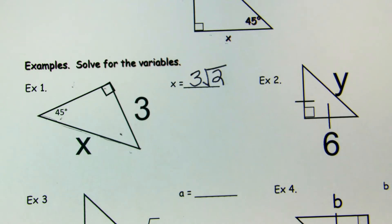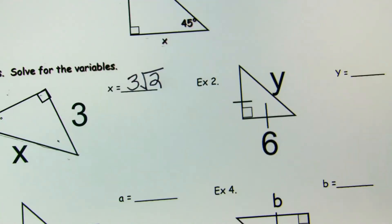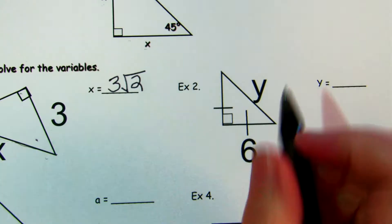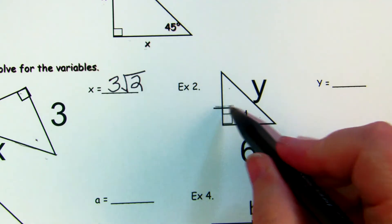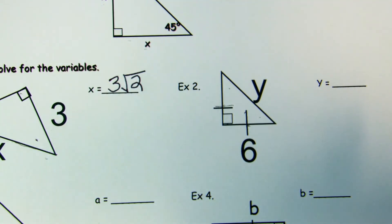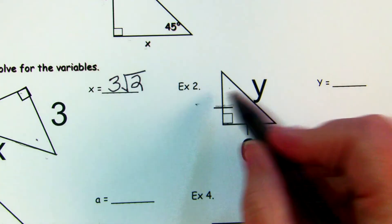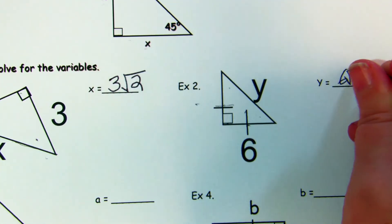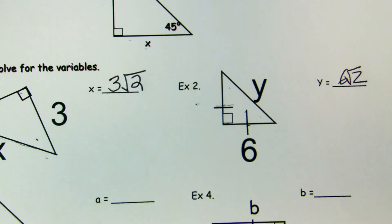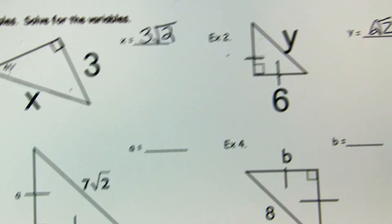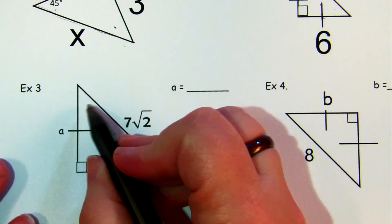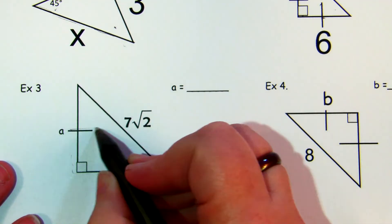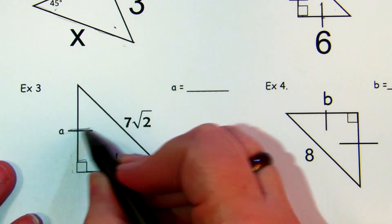Example two: this one doesn't explicitly show 45-degree angle labels, but it is an isosceles right triangle so you can use the theorem. The legs are both 6, and y — the hypotenuse — is 6√2. You multiply the leg by √2 to get the hypotenuse.